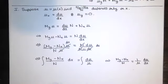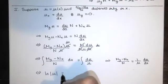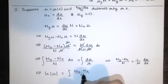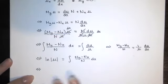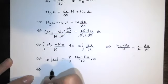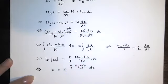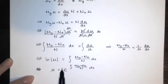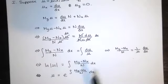If (M_y − N_x)/N depends only on x, then anti-differentiating gives ln|μ| on the left, and we exponentiate both sides to get μ. Dropping the ± (since multiplying by −1 doesn't affect the DE), we have μ = e^(∫[(M_y − N_x)/N] dx). This is the integrating factor that makes the equation exact — but only if that expression is a function of x alone.